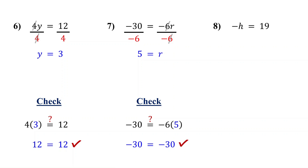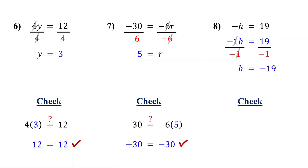What if there is just a negative sign in front of the variable? That means the variable is being multiplied by negative 1. Here, negative h is the same as negative 1 times h. So to isolate h, divide both sides by negative 1. On the left, the negative 1s cancel out, leaving h by itself. On the right, 19 divided by negative 1 is negative 19. So the solution is h equals negative 19. Make sure it checks out by plugging in negative 19. Negative 1 times negative 19 is positive 19. So it works.